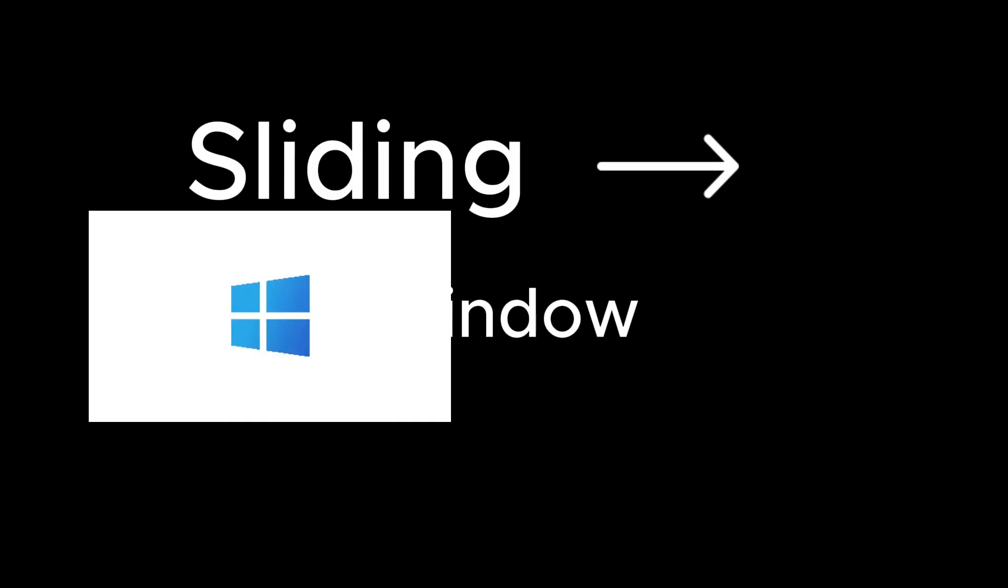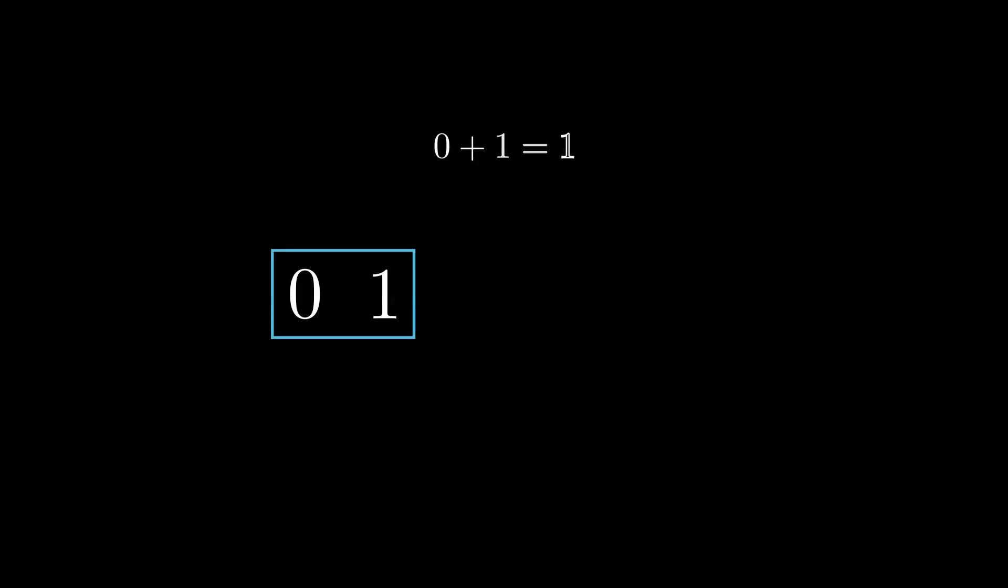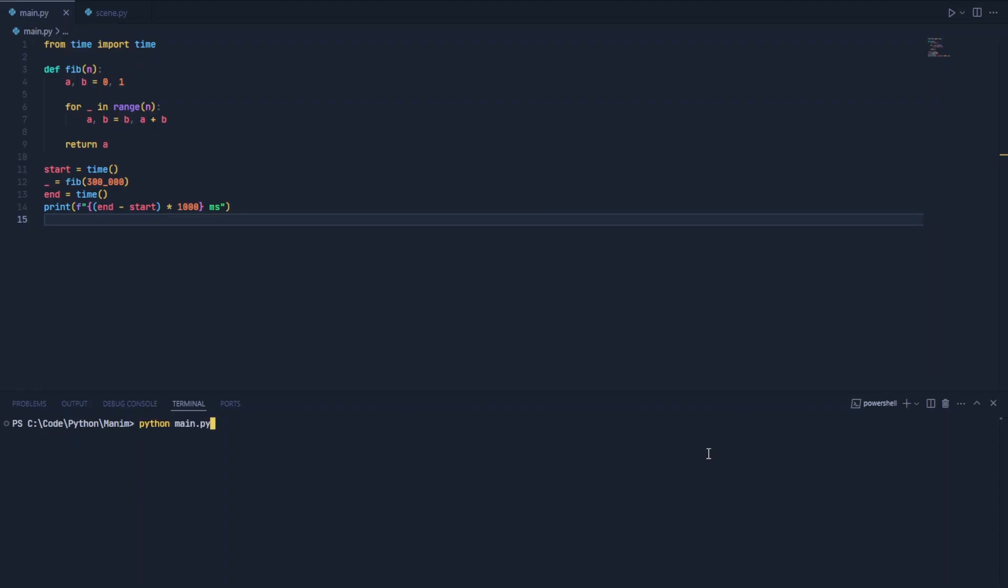Called the sliding window technique. Instead of storing the whole sequence, we only store the last two Fibonacci numbers as the rest are useless to us. This saves a ton of space and lands us at the 300,000th Fibonacci number in under a second.